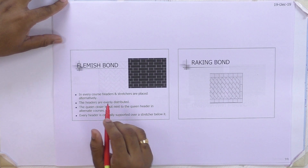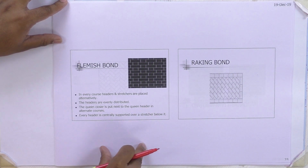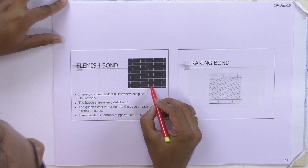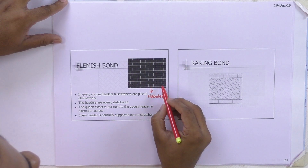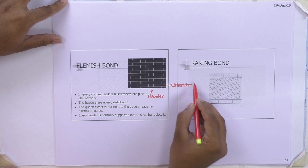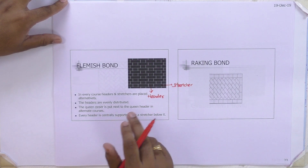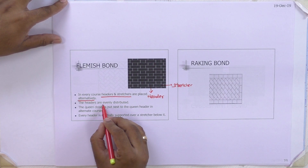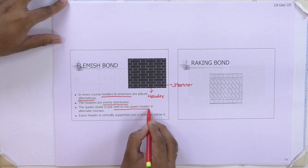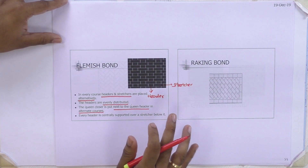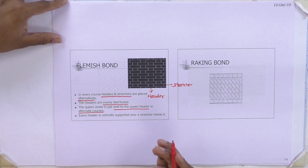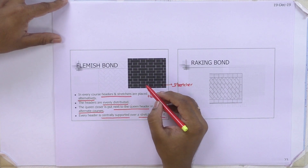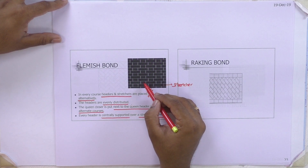Next type of bond is Flemish bond. In this type, in the same layer itself, one brick is in the form of a stretcher and another brick is a header. In every course, headers and stretchers are placed alternately. The headers are evenly distributed. The queen closer is put next to the queen header in alternate courses. Wherever a closer is necessary, we provide either a queen closer, king closer, or beveled closer. Every header is centrally supported over a stretcher below it.